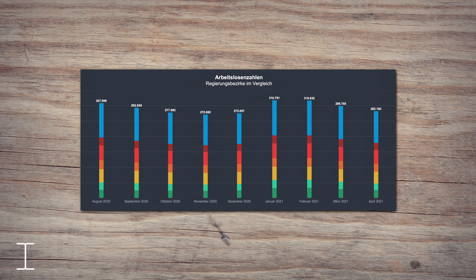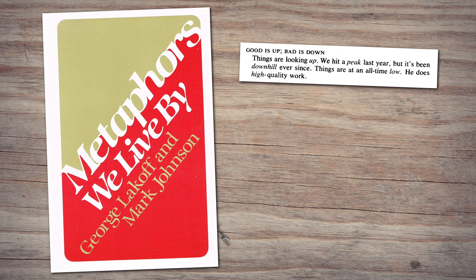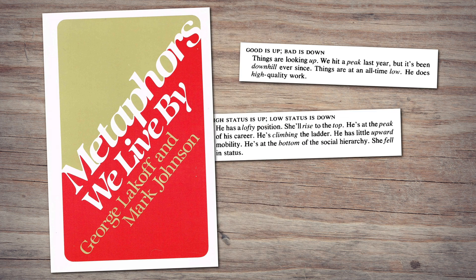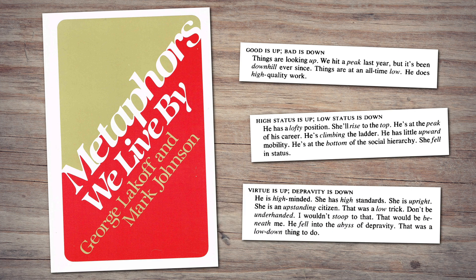Bars in bar charts usually point up. It's not just a convention — it's actually deeply rooted in our understanding of the world. We use spatial metaphors more than we realize, and we associate up with good. George Lakoff and Mark Johnson talk about this in their book, Metaphors We Live By. Up is good, down is bad. Up is high status, down is low status. Up is virtuous, down is depraved. Because of that, bars pointing down are a powerful way to make you pay attention and to tell you that what's being shown is bad.